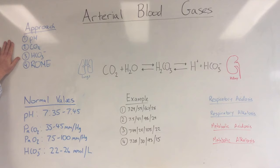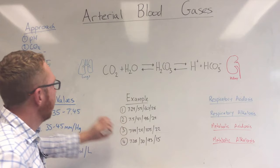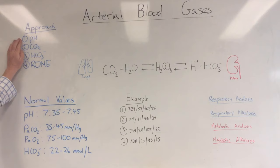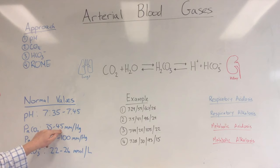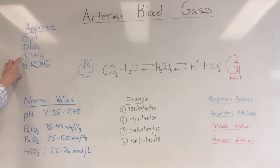This is the four-step approach to reading an ABG. Step one: look at the pH, which should be 7.35 to 7.45. Step two: look at the carbon dioxide level, which should be 35 to 45. Step three: look at the bicarbonate, which should be 22 to 26 millimoles per litre.